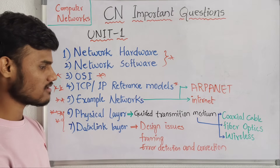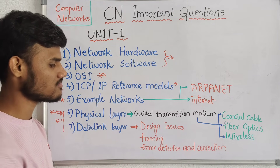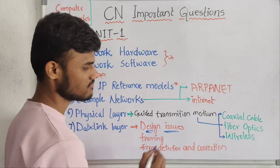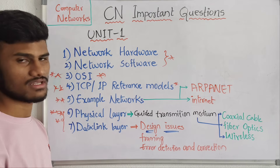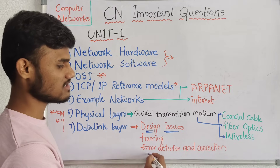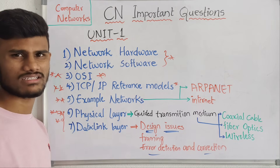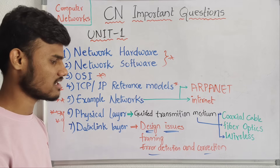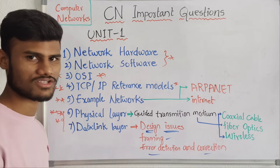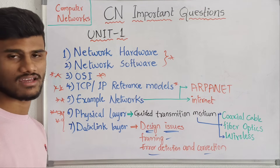And in the data link layer, the design issue is most important. Also, error detection and error correction are important topics. We need to cover those topics. Framing definition also needs to be understood. So these are the important questions in this section.